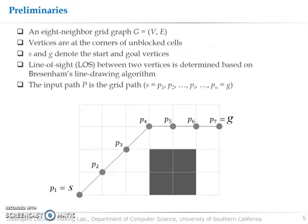Our work is based on eight neighboring grid paths where its cell is either blocked or unblocked and vertices are placed at the corner of unblocked cells. Start and goal vertices are denoted as S and G. Line of sight check between two vertices is performed based on the modified Bresenham line drawing algorithm to see if the line segment is blocked. The input grid path is given with a sequence of vertices where each vertex on the path is labeled in the order in which they appear on the path.